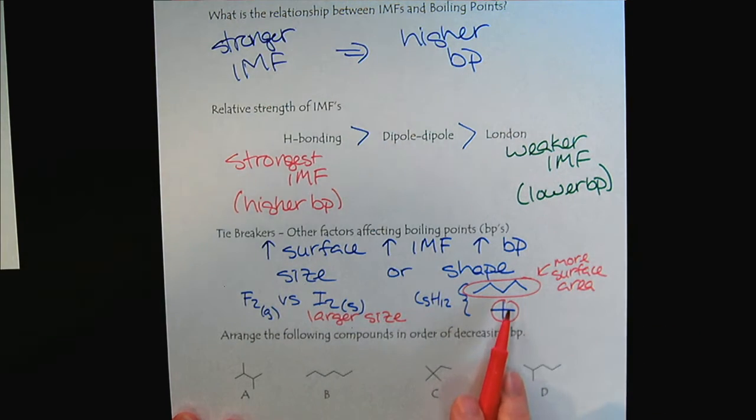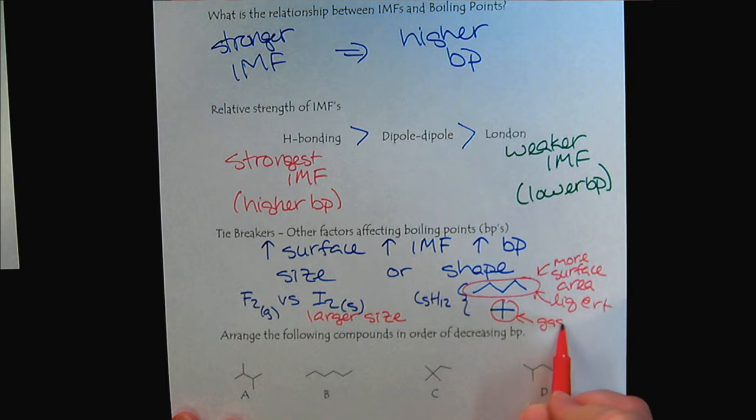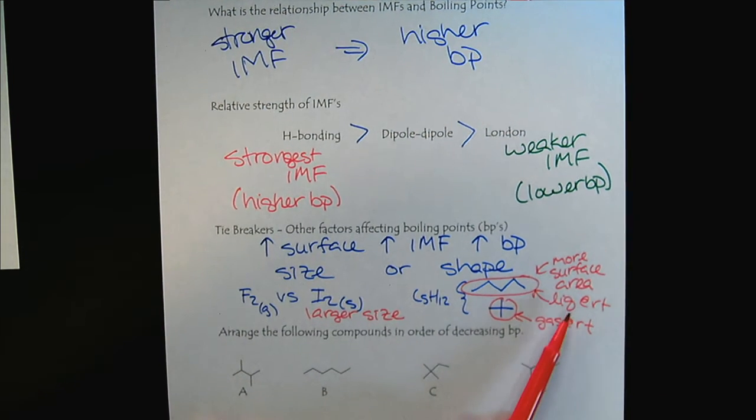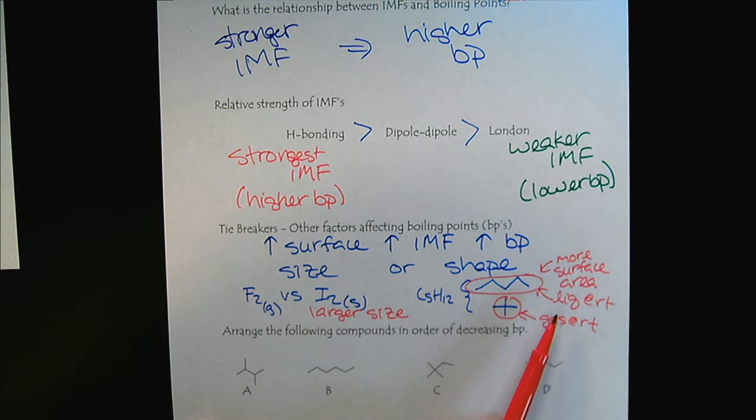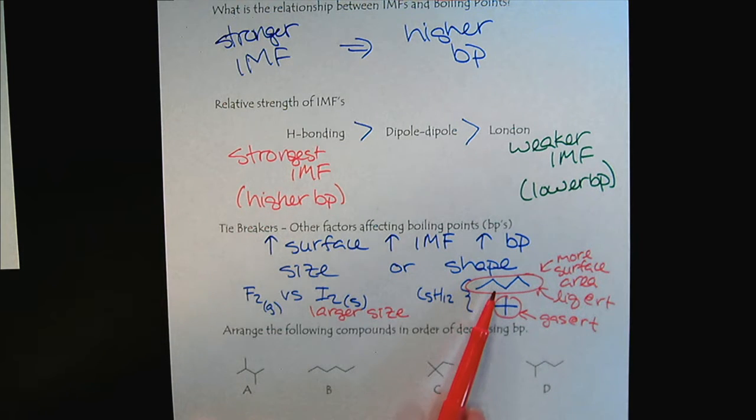And so when we looked here, we see that this compound is a liquid at room temperature, and this compound is a gas at room temperature. So we have a very physical example of the intermolecular forces, and that the higher boiling point creates a substance that's a liquid at room temperature.